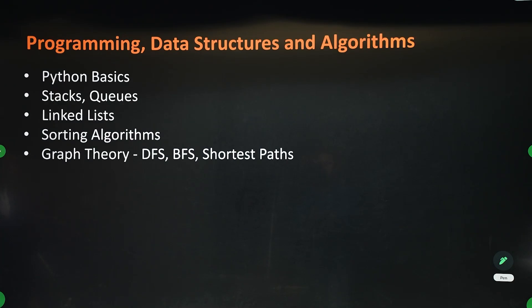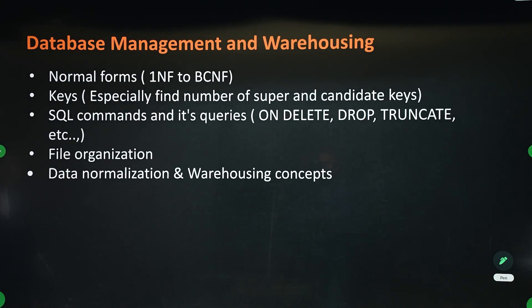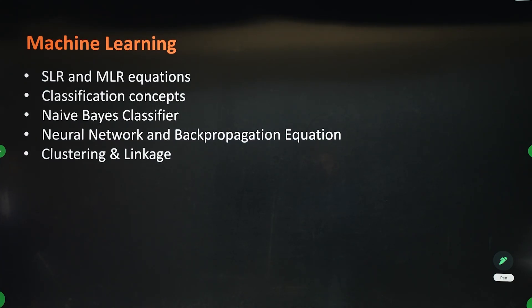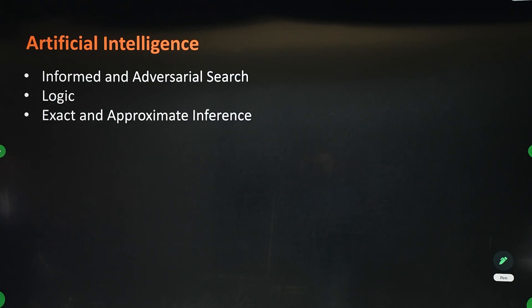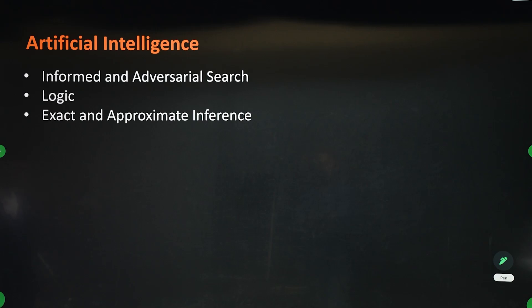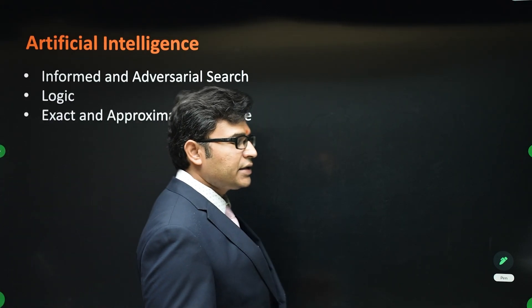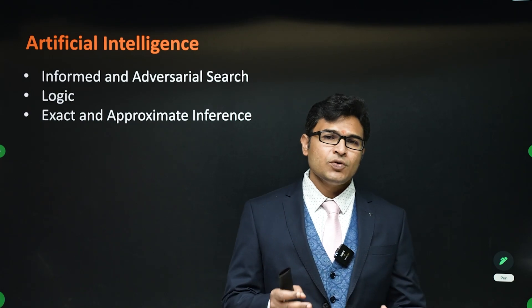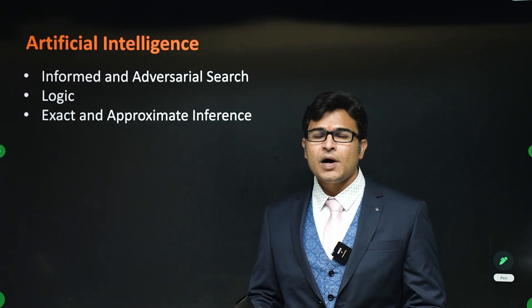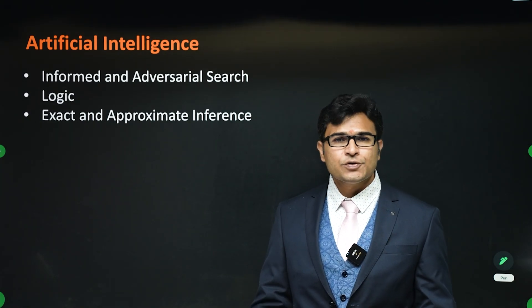This is about programming, data structures, and algorithms. This is about database management and warehousing. Programming, data structures, and algorithms are there in GATE CS also, so we are taking those topics as well. Database management is also in GATE CS. This is about machine learning, and this is about artificial intelligence. These are all the topics. I hope you have read the topics — spend more time on these topics and you will more likely be able to get more than 50 marks in 30 days. Thank you so much.